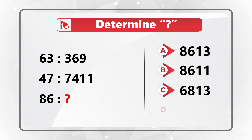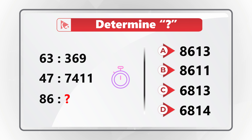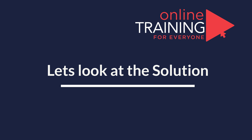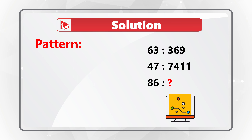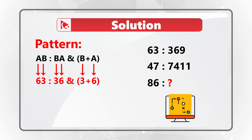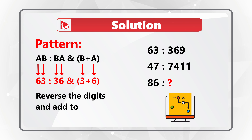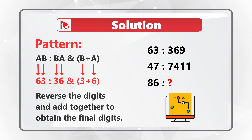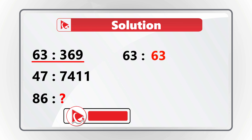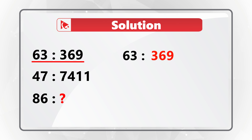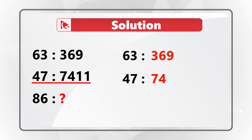Here is an interesting question testing your analytical skills. You're presented with three ratios: 63 to 369, 47 to 74 11, and then 86 is related to a question mark. Choices: A) 86 13, B) 86 11, C) 68 13, D) 68 14. The pattern: A:B relates to BA concatenated with (A+B) — reverse the digits and add them together.